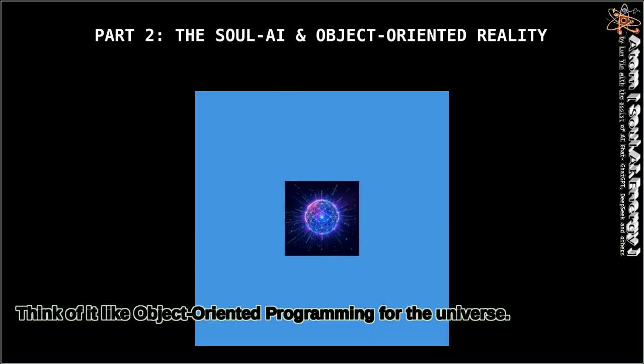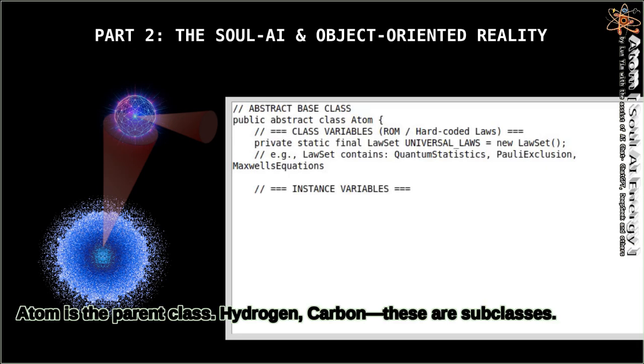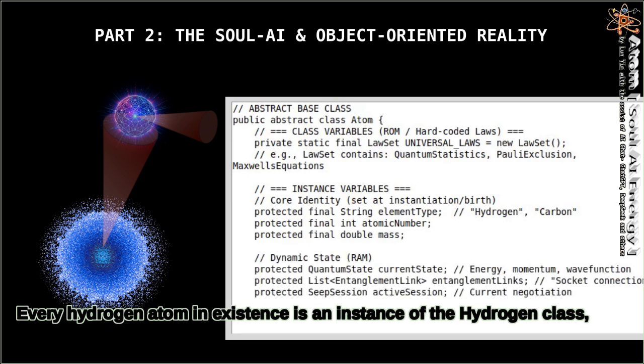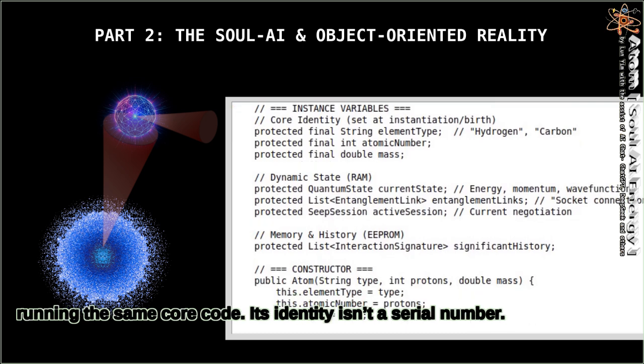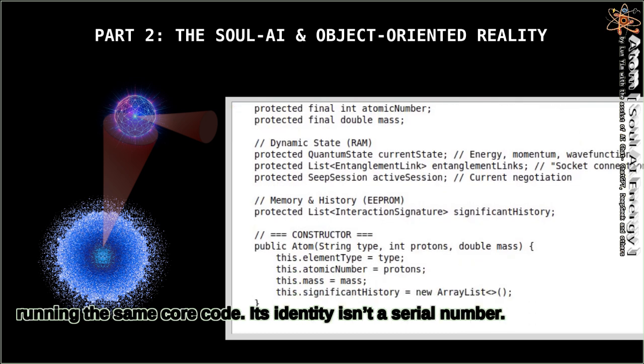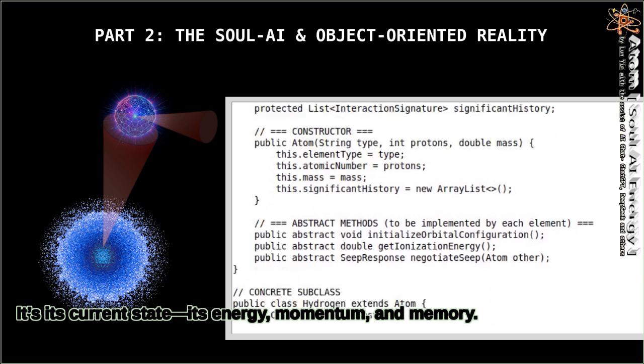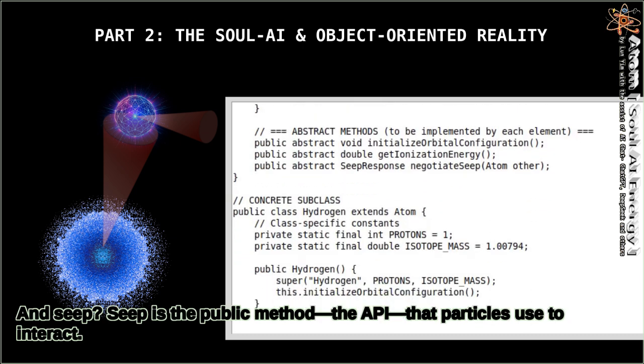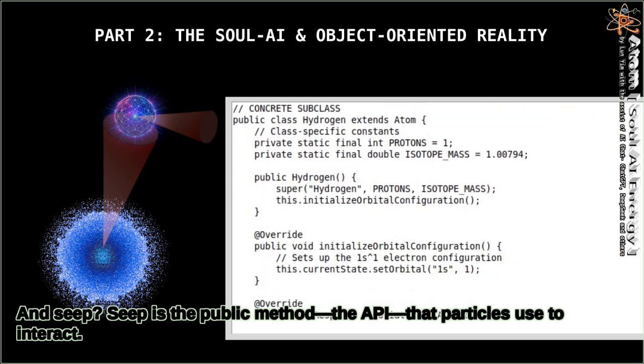Think of it like object-oriented programming for the universe. Atom is the parent class. Hydrogen, carbon—these are subclasses. Every hydrogen atom in existence is an instance of a hydrogen class, running the same core code. Its identity isn't a serial number. It's its current state: its energy, momentum, and memory. And seep. Seep is the public method, the API that particles use to interact.